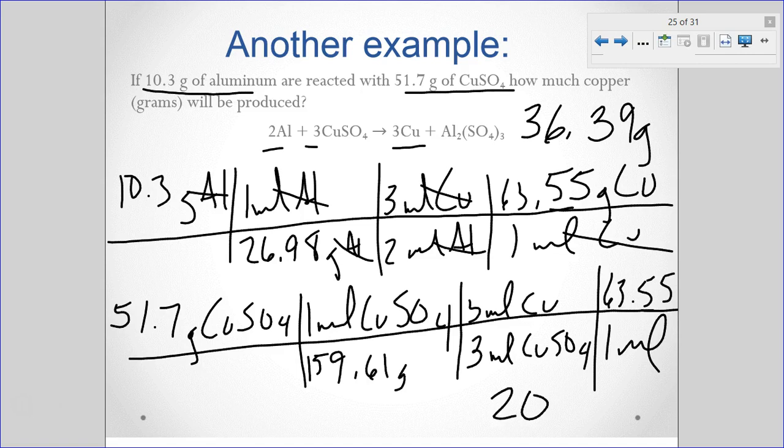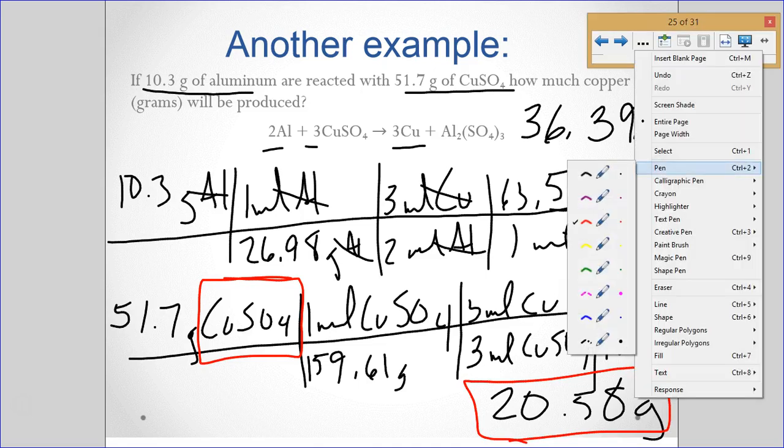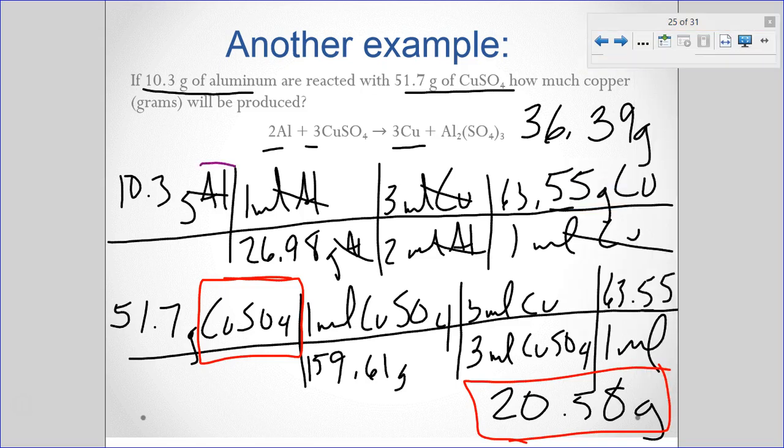Let's look at the second one. 51.7 divided by 159.61 times 3 divided by 3 times 63.55. I came up with 20.58 grams copper. So, based off what we're looking at here, look for the smaller one, which one gave you the smaller amount, we would say that our limiting reactant in this case is going to be our copper sulfate because it produced only 20.58 grams. Whereas, then, that would make our aluminum our excess reactant. This is the one we have extra of.